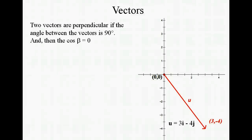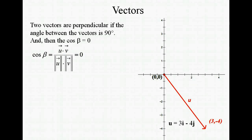Let's discuss perpendicular vectors. You know that they're going to have an angle between them of 90 degrees if they're perpendicular, which means the cosine of the angle must be 0. If the cosine of the angle is equal to 0, that's only going to happen when our numerator is equal to 0, or where the dot product is equal to 0. So that simplifies our formula down quite a bit when we're looking at perpendicular vectors.